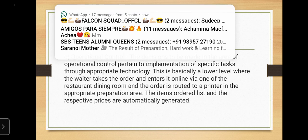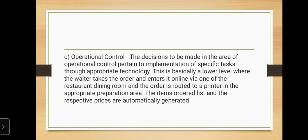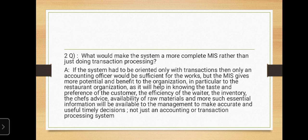Third, operational control decisions pertain to the implementation of specific tasks through appropriate technology. This is basically a lower level where the waiter takes the order and enters it online via one of the restaurant dining room terminals, and the order is routed to a printer in the appropriate preparation area. The items ordered and their respective prices are automatically generated.